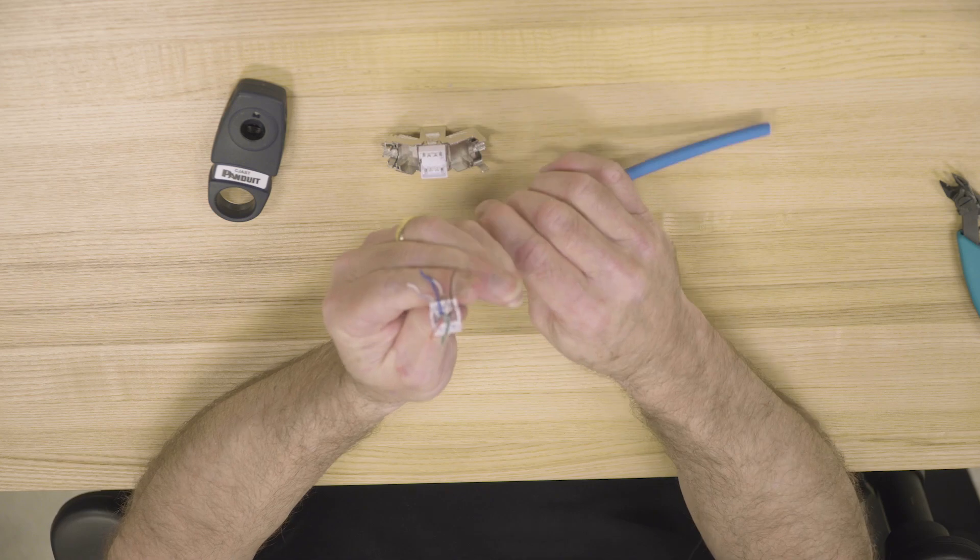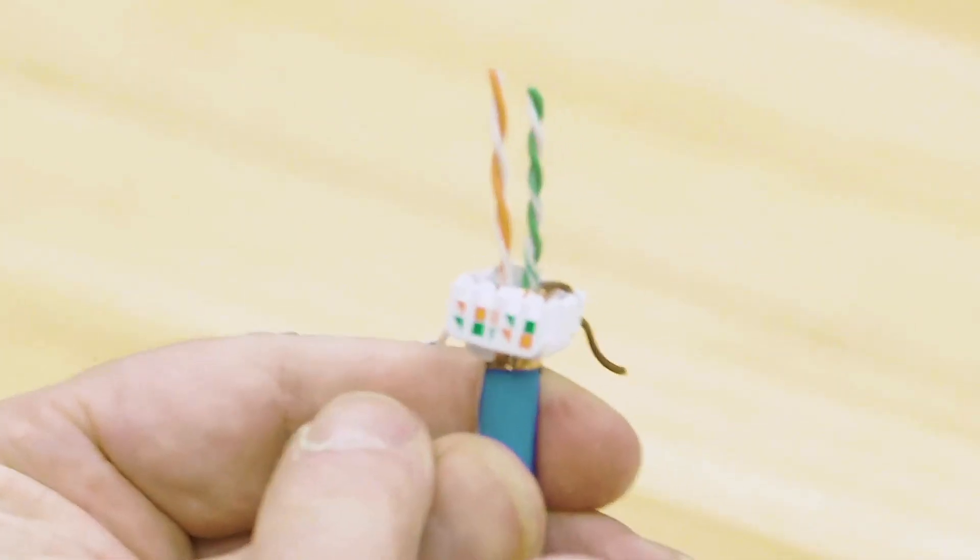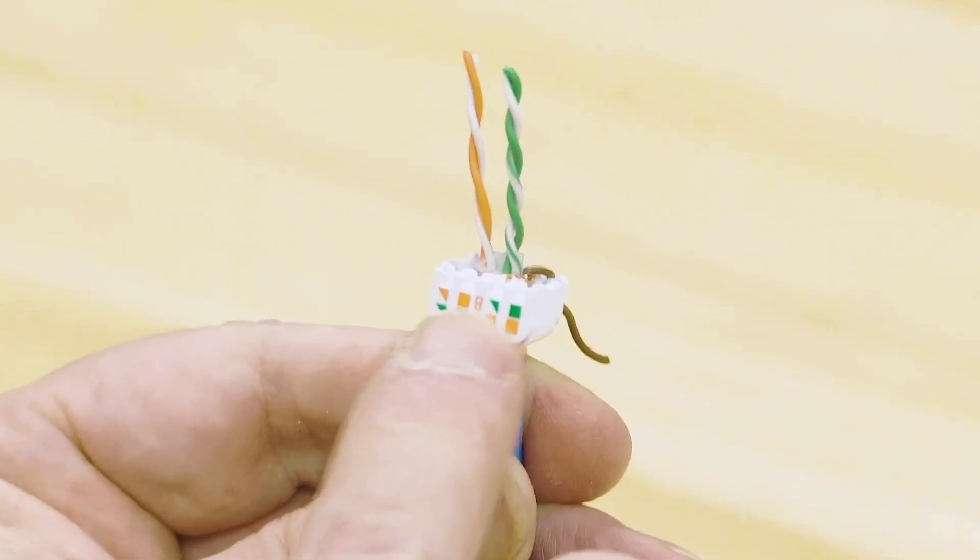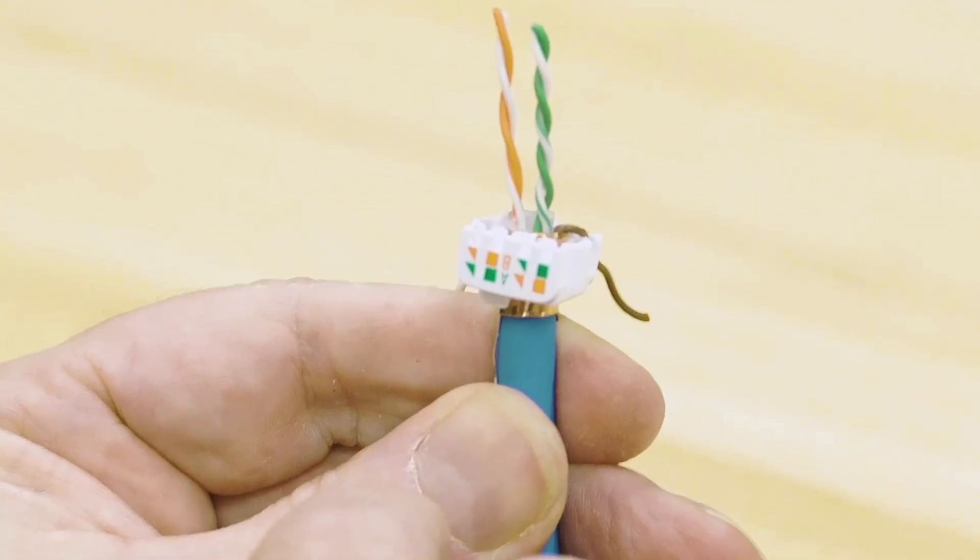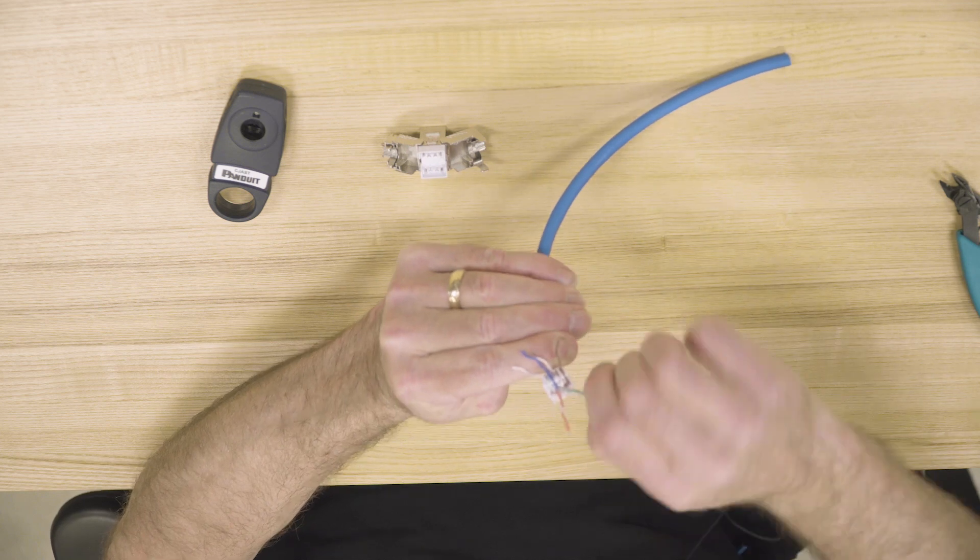Turn it around and do the same thing with green and orange. You'll notice on this side the white conductors are on the left side as opposed to the right side on the other side. Set the green one.